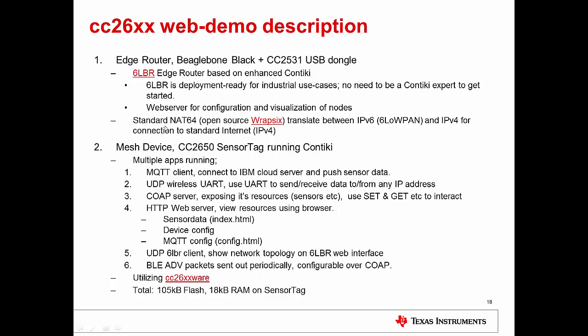For standard backhaul network internet connectivity, you need standard MAC64, open source RAP6, to translate between IPv6 and IPv4 for connection to the standard network. As for the mesh device — each node of the network — the CC2650 sensor tag or CC2650 EM on SmartRF06EB runs Contiki on it.